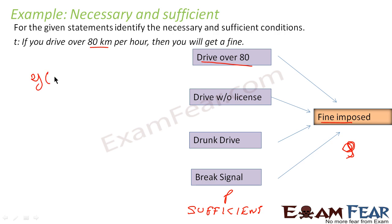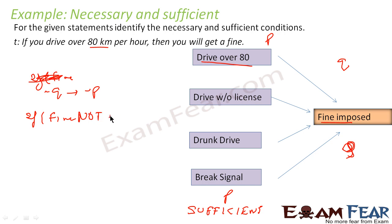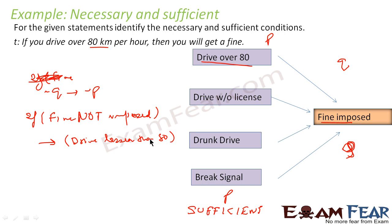We can write the same condition in another form. If fine is not imposed — that is, if P implies Q, I can write the contrapositive as not Q implies not P. So I will say: if fine not imposed, then driving is less than 80. That is not Q. So if fine is not imposed, then driving is less than 80. This is actually a necessary condition.